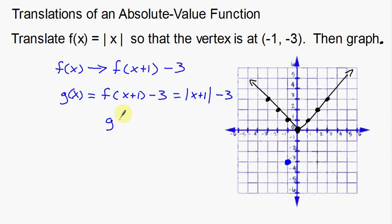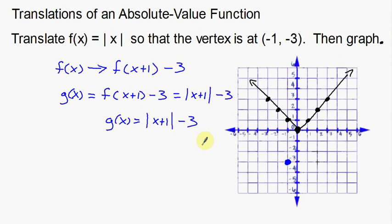So my new g of x function is the absolute value of quantity x plus 1, close the absolute value, minus 3. I don't really have to do any simplifying — that is what the function is going to look like. That's the notation, and that's the function.